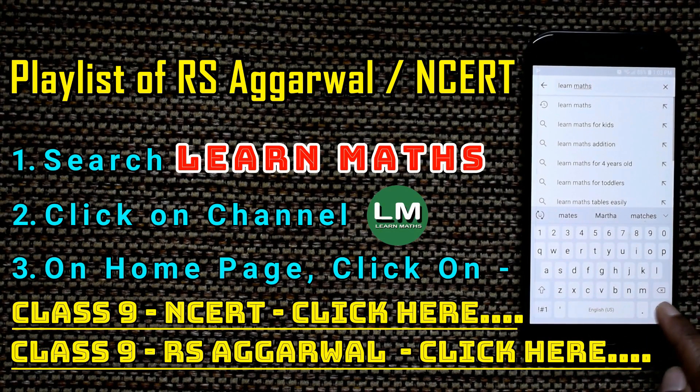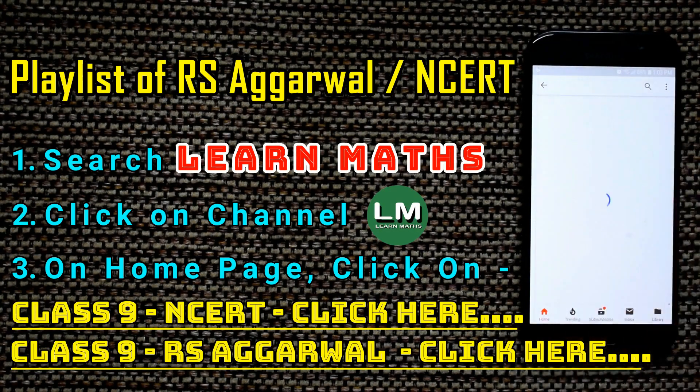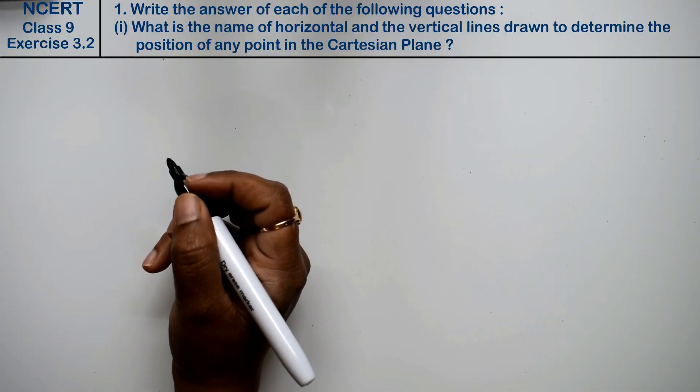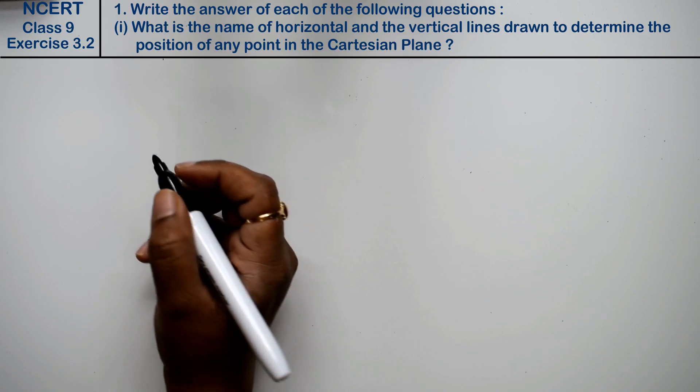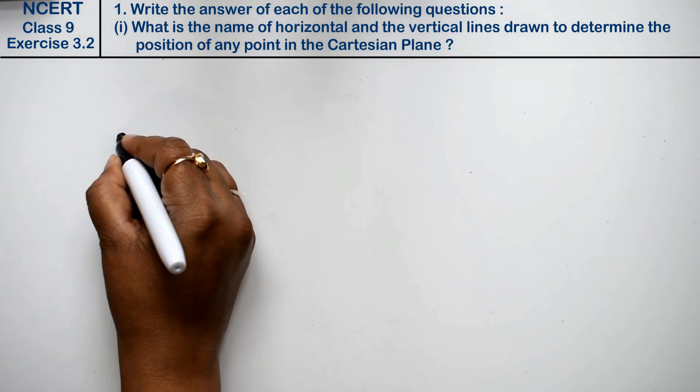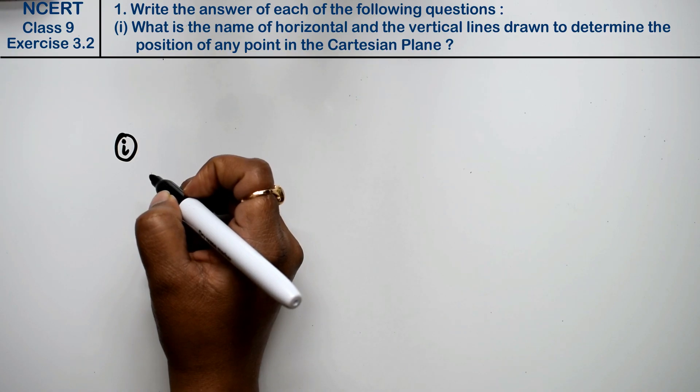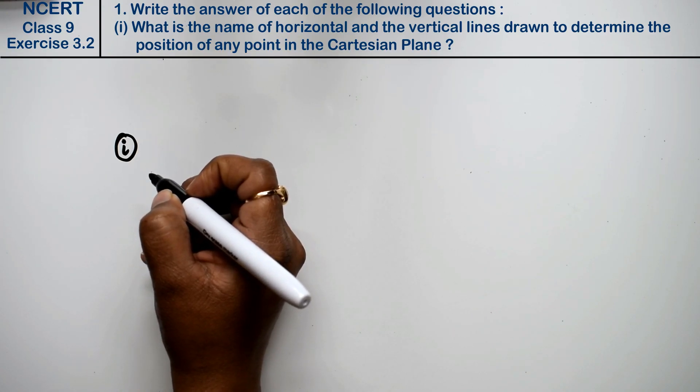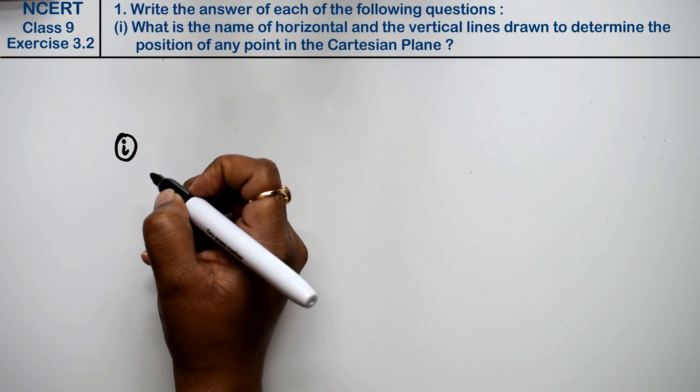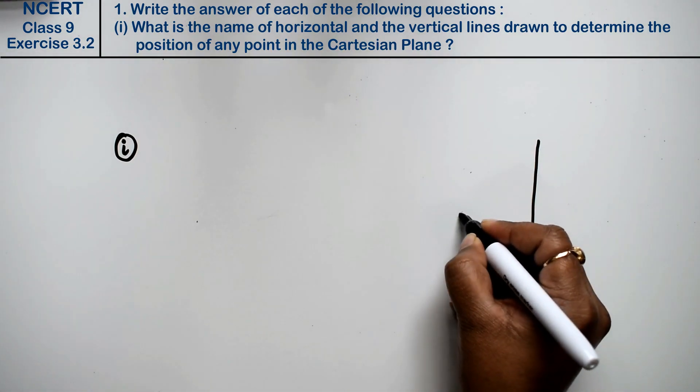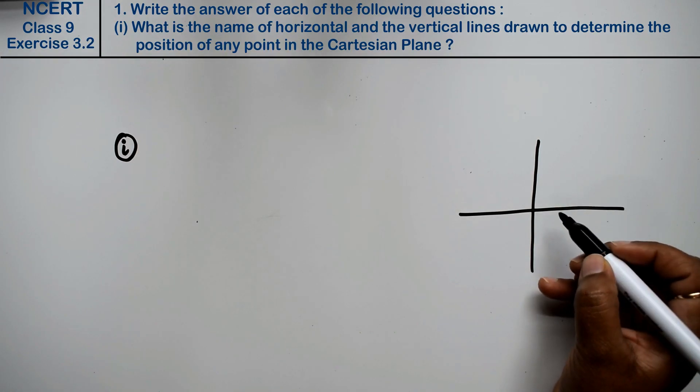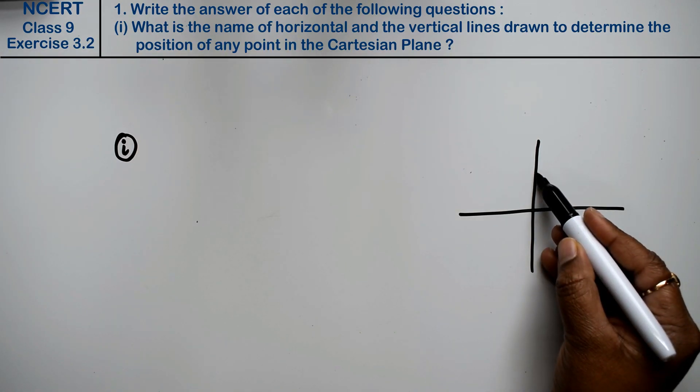Let's do question number first of Exercise 3.2, that is Coordinate Geometry. Question number first: Write the answer of each of the following questions. First part is, what is the name of the horizontal and the vertical line drawn to determine the position of any point in the Cartesian plane? Friends, this is saying that these lines are in graph paper in Cartesian plane. So what do you call these lines?